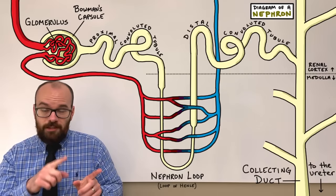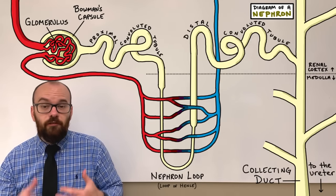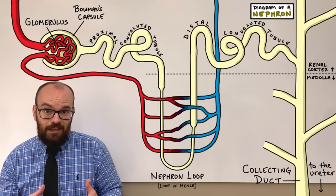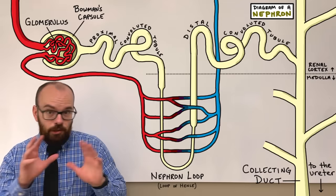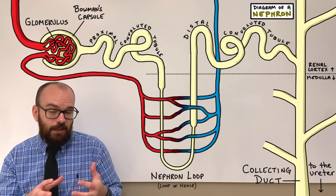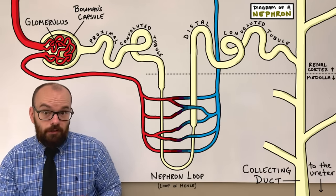I'm about to draw this diagram of a nephron. It's the functional unit of filtration in the kidney. But before we jump to the whiteboard and do that, let's take a look at the kidney model and see where these things are located.